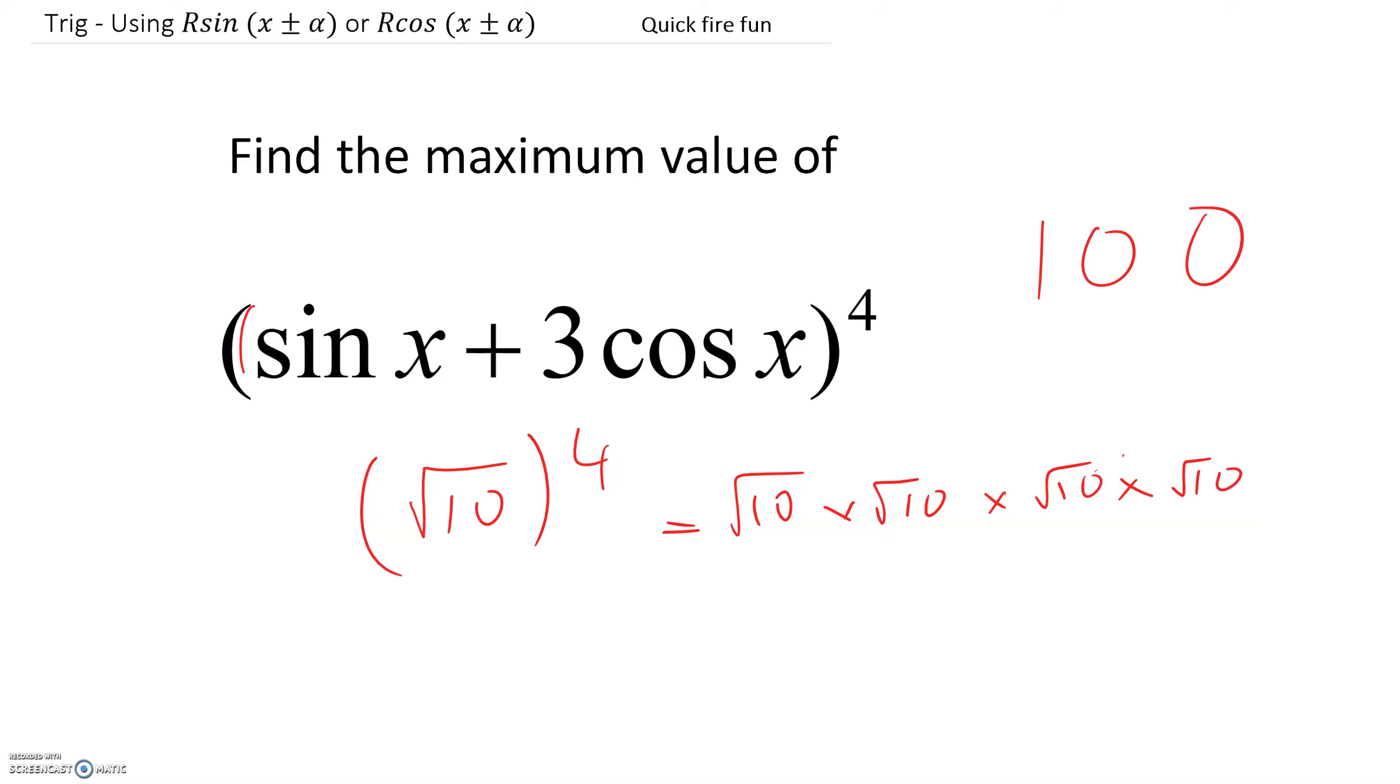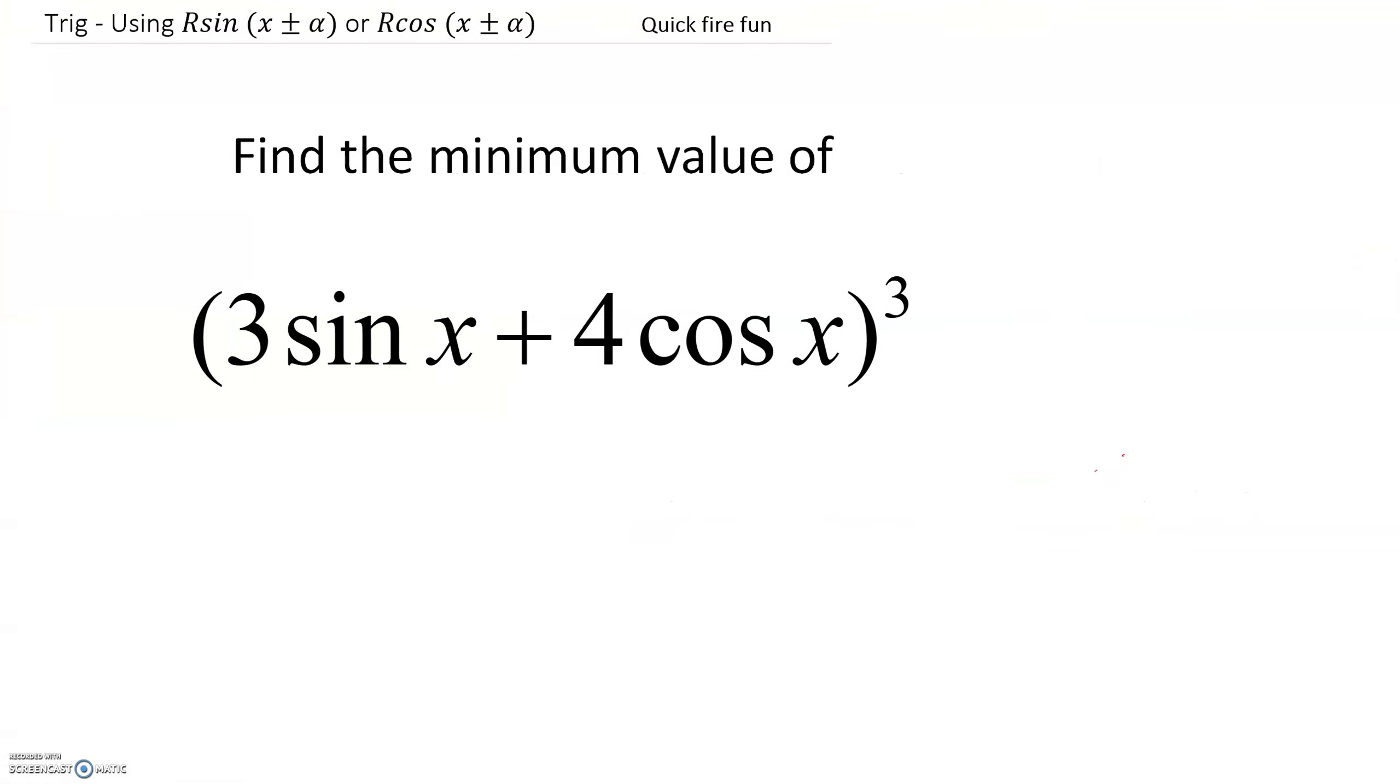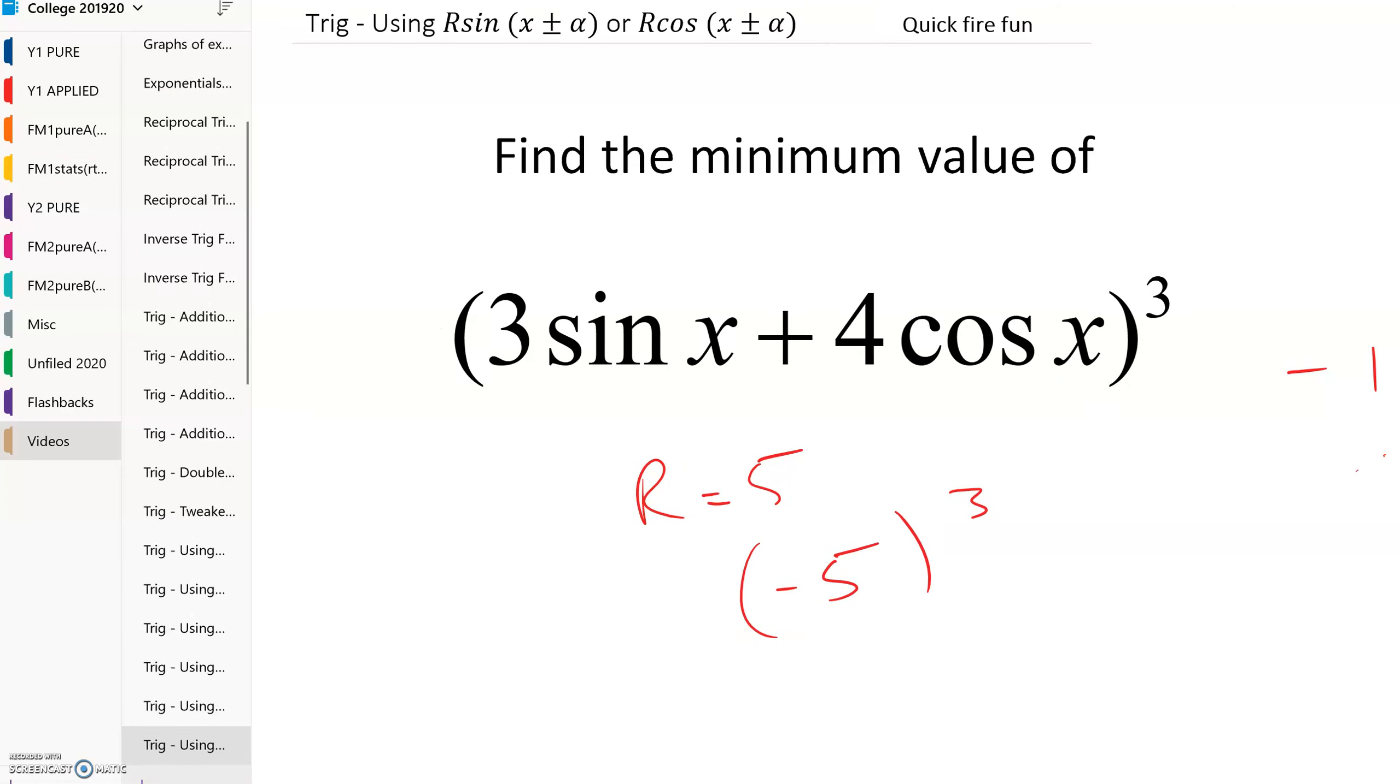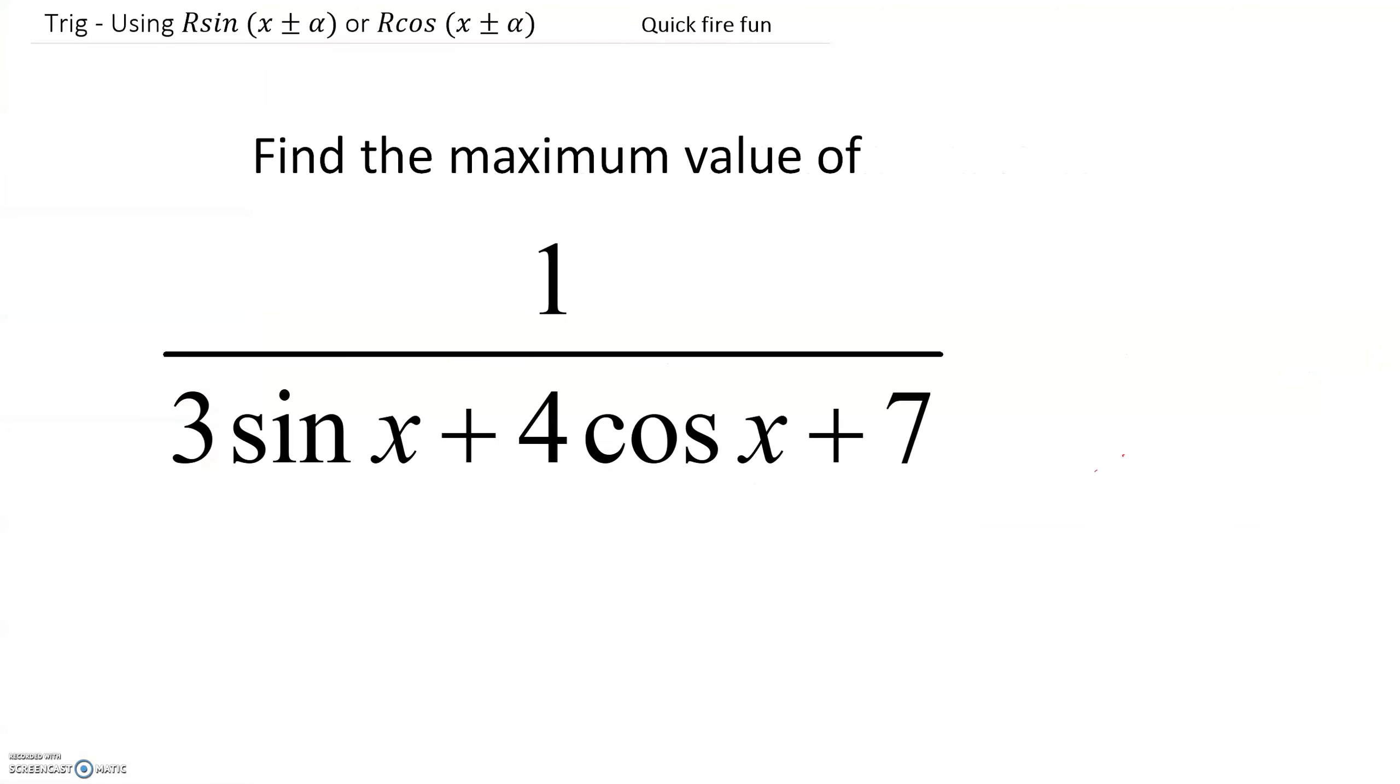Let's just do a couple more. In this one, R would equal 5. And so the maximum value, it's a minimum value. So the minimum value in the bracket would be minus 5. And then you do minus 5 cubed. So that'd be minus 125 for that one. And I think we've got one more here. Let's just try doing one more. This time we want the maximum value of this whole fraction, which means we want the minimum of the denominator. If we want the whole fraction to be at its maximum, we want to divide by as small as possible. So on the denominator, we're going to, if we change this in the form R sin(x plus alpha), we would have 5 sine of something in a bracket plus 7.